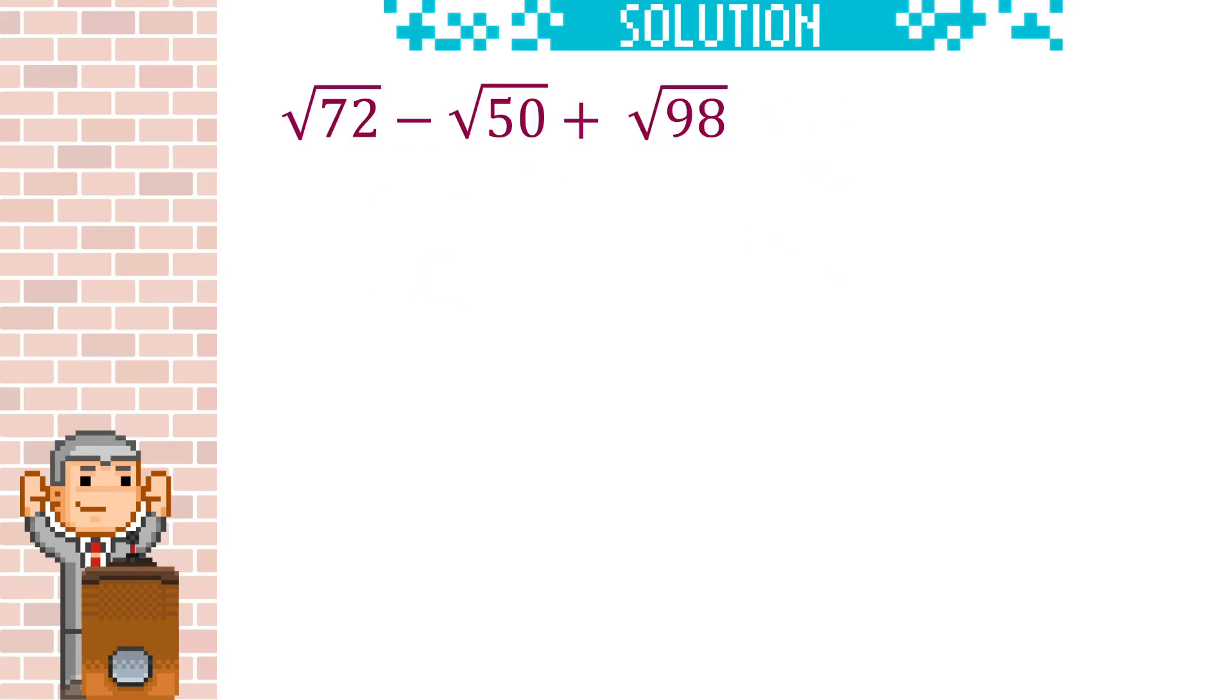In this question, we need to simplify each of the surds. So here we know that 72 is 36 times 2, 50 is 25 times 2, and 98 is 49 times 2. And root 36 is going to be 6, root 25 is 5, and root 49 is 7.